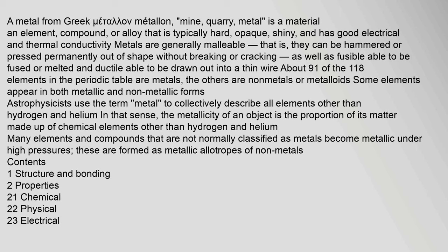Metals are generally malleable — they can be hammered or pressed permanently out of shape without breaking or cracking — as well as fusible (able to be melted) and ductile (able to be drawn out into a thin wire). About 91 of the 118 elements in the periodic table are metals; the others are non-metals or metalloids. Some elements appear in both metallic and non-metallic forms. Astrophysicists use the term 'metal' to collectively describe all elements other than hydrogen and helium.